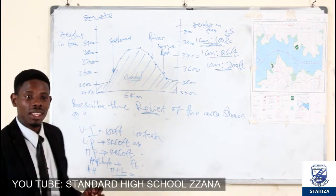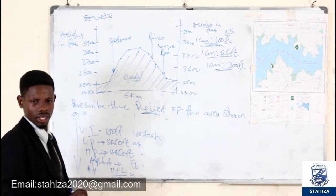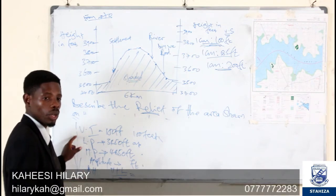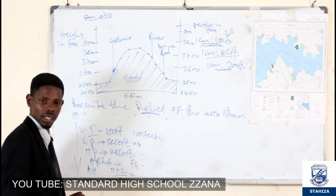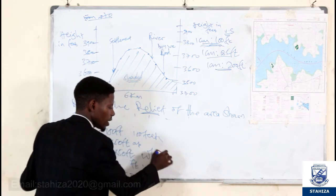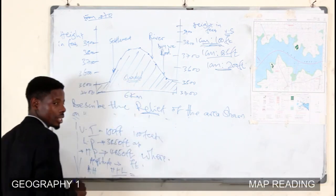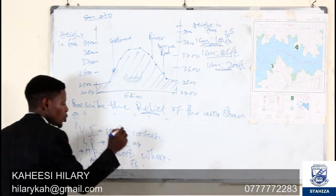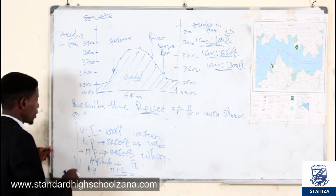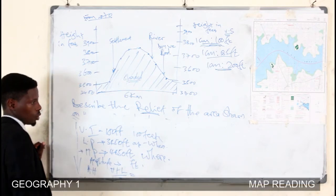Mathematically, we can describe relief using these figures and get all the maximum marks. Tell us the vertical interval, the lowest point, the highest point, the amplitude by subtracting, and the average height. However, while giving the highest and lowest points, you must tell us where we can find them on the map extract — using direction, local place names, and grid squares. The vertical interval is simply the difference between two successive contours.